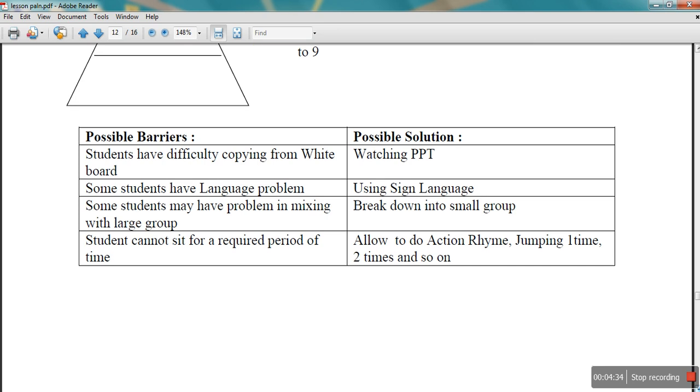So there are possible barriers. When a teacher has used whiteboard, there is a barrier that the child cannot copy. The solution is that they will watch PPT on their computers. Some of the children have a language problem, so the solution is she has used sign language. Some of the children have problems in large groups, so she has broken down the classroom into small groups.